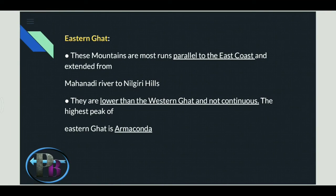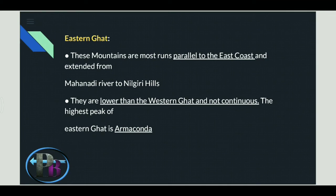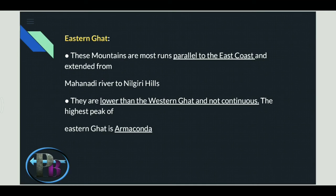The Eastern Ghats run parallel to the east coast, extending from the Mahanadi River to the Nilgiri Hills. They are lower than the Western Ghats and not continuous — the Western Ghats are continuous but the Eastern Ghats are not. The highest peak in the Eastern Ghats is Arma Konda, whereas Anamudi in the Western Ghats is the highest peak in South India overall.